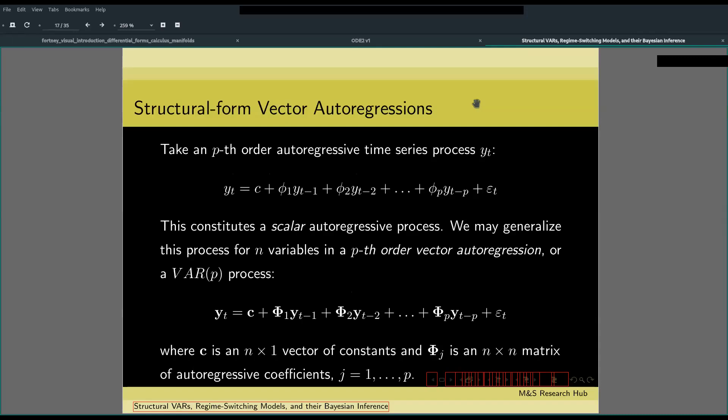Now suppose an order p autoregressive time series process. This now becomes what we call a scalar autoregressive process.